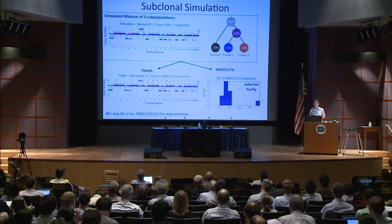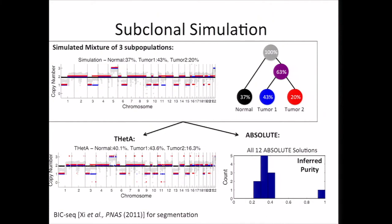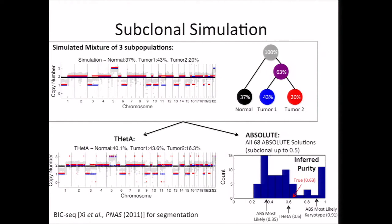I want to note that while ABSOLUTE has recently announced a new version, we weren't able to get a copy due to licensing issues, so the results shown here are for an older version. ABSOLUTE returns a collection of different solutions with different purities and likelihoods that an analyst can annotate. Shown here is a histogram of the purity values returned for all 12 solutions, and the bulk of them are actually much lower than the true purity of 63 percent. We also noticed a parameter in ABSOLUTE that allows you to set the maximum amount of DNA predicted as subclonal — by default set to 5 percent. Increasing that returns more solutions, some near the true value, but the most likely solutions are still much lower. This really demonstrates that it's important to explicitly consider multiple subclonal populations, particularly when trying to infer tumor purity.